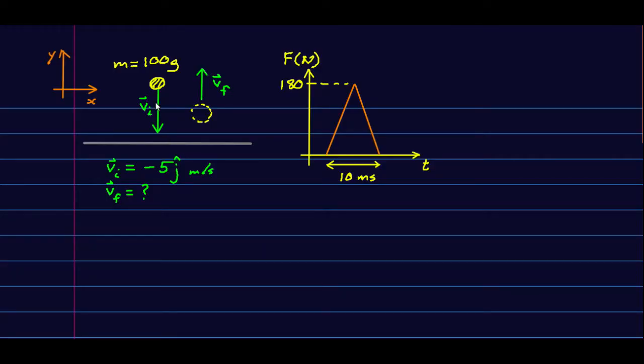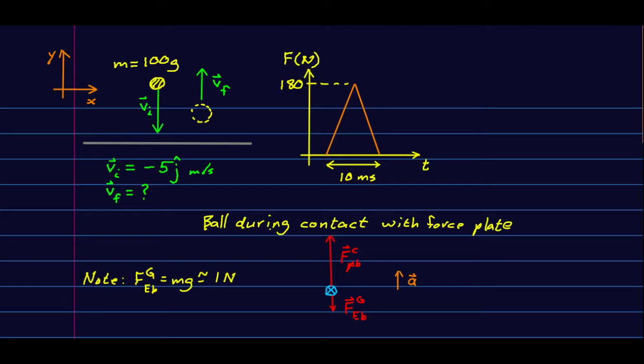Here's a ball hitting the floor, and we know its velocity before it hits the floor, but not after. But perhaps we have a force plate or something, and it's recorded this force versus time data. So I have drawn the free body diagram for the ball during its contact with the force plate. All there is is a force up due to the force plate and the downward gravitational force, and the ball must be accelerating upward during the bounce off the force plate. And I'll just note that the gravitational force on it is about one newton.